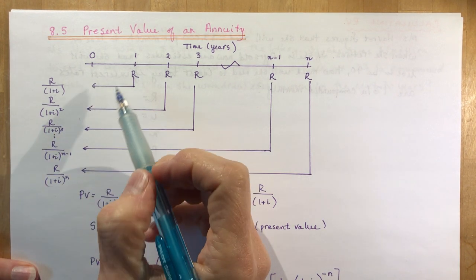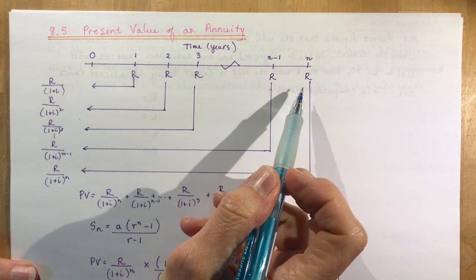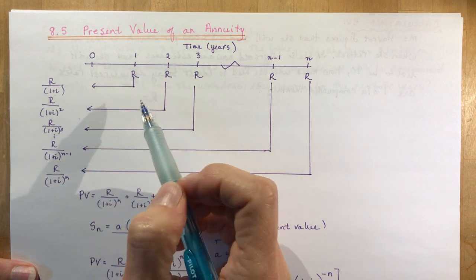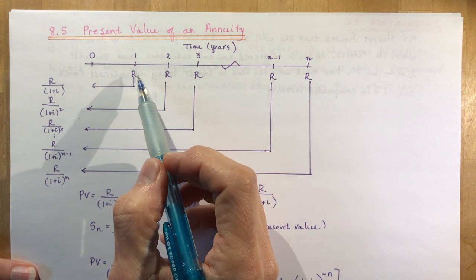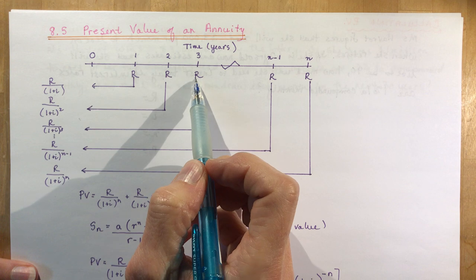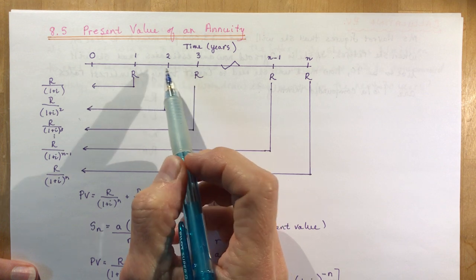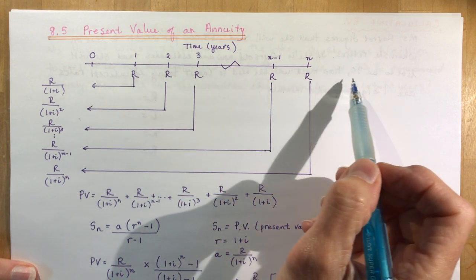What we have here is a number of regular payments that you're going to be paying yourself. In other words, you're going to be withdrawing money this time. The last video we were putting money in to have a certain amount in the future.